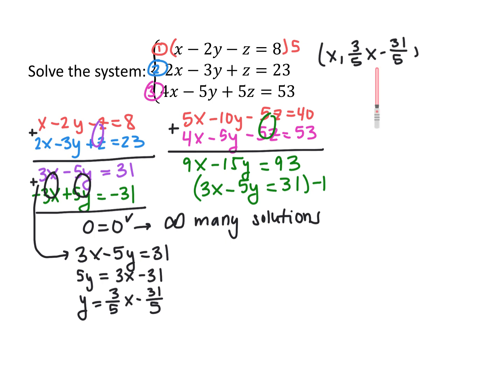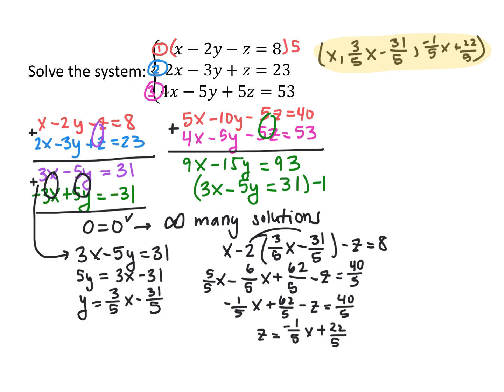Just like if we had numbers for x and y, we plug x and y — which is three-fifths x minus 31 over 5 — into one of the three original equations to solve for z. After distributing the negative 2 and combining like terms, I got z equals negative one-fifth x plus 22 over 5. So the coordinate triple has x as any real number, y equals three-fifths x minus 31 over 5, and z equals negative one-fifth x plus 22 over 5. Whenever we have infinitely many solutions, we write out the full pattern of coordinate triples.